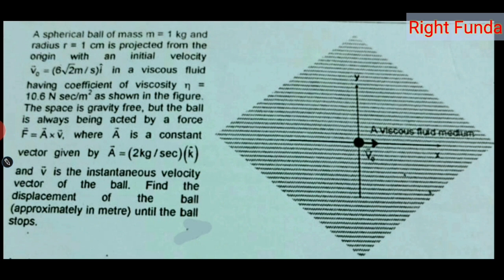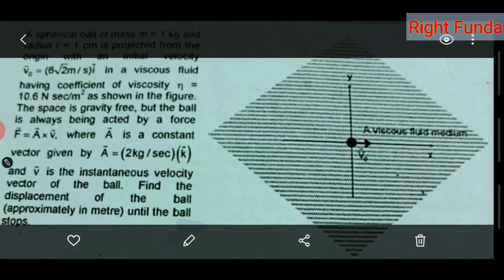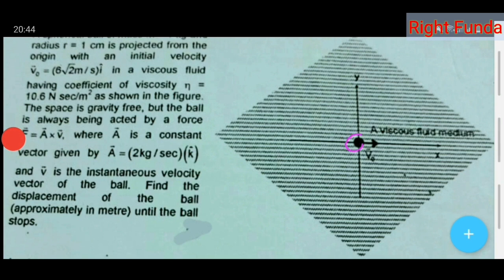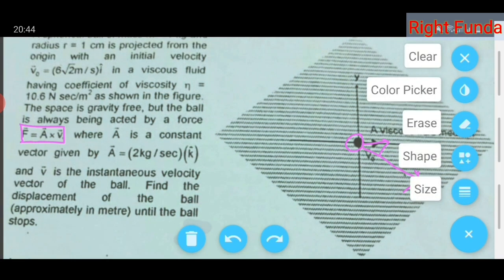Find the displacement of the ball until it stops. The diagram shows a viscous fluid in which the ball is given some initial velocity. Two forces act on the body: the viscous force and the special force F = A⃗ × V⃗. The ball moves in two dimensions and we need to calculate the displacement from start until it stops somewhere.